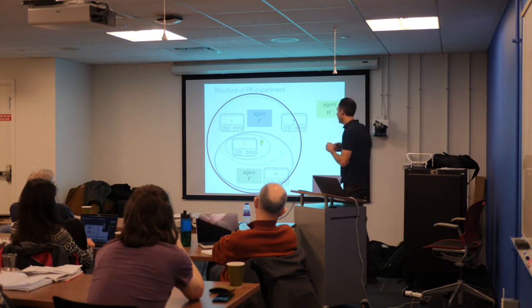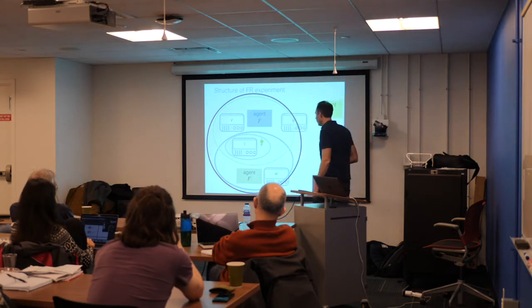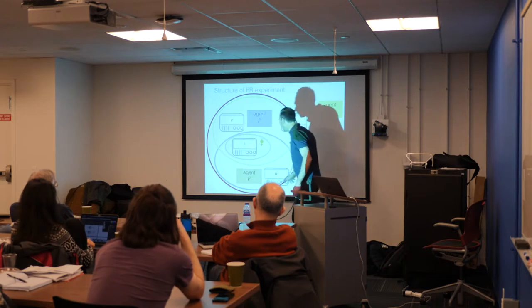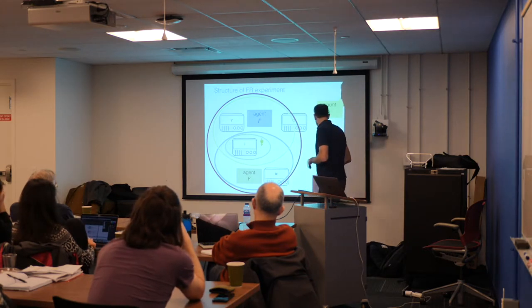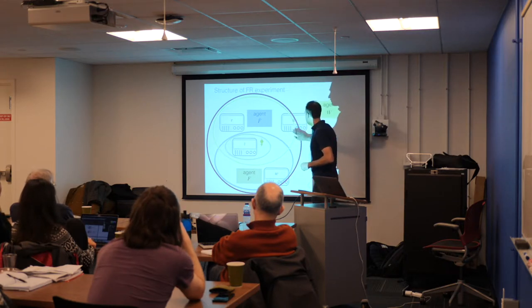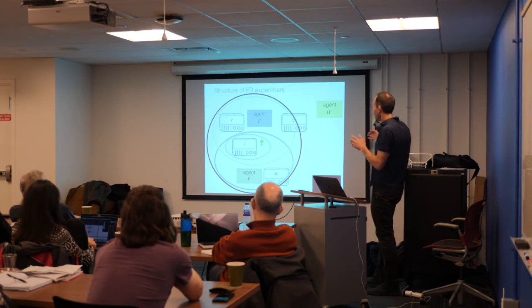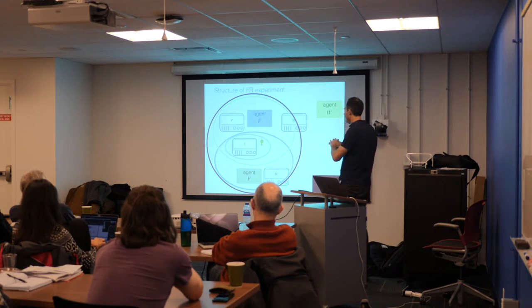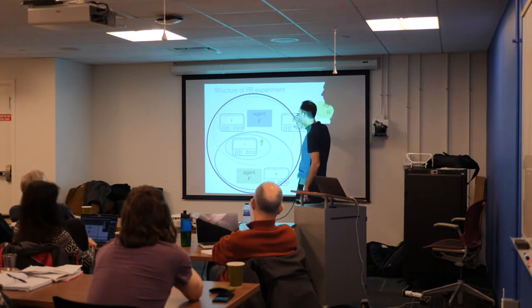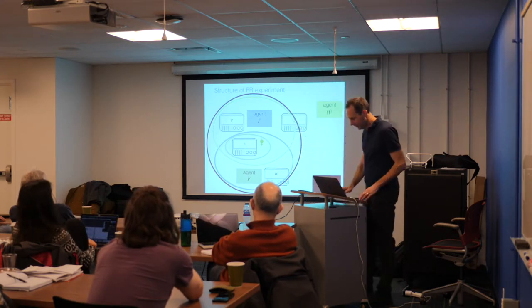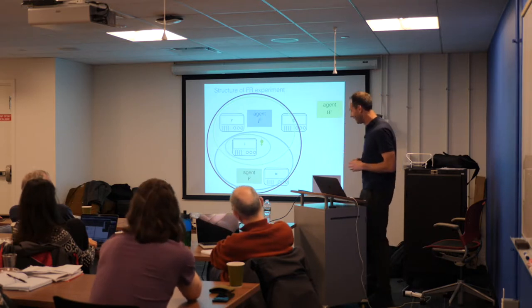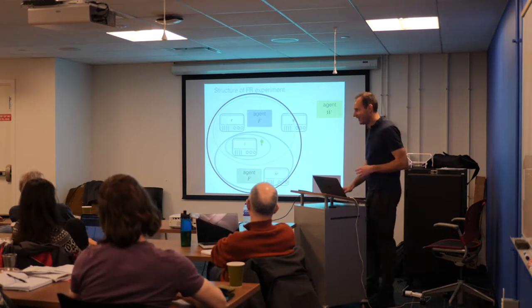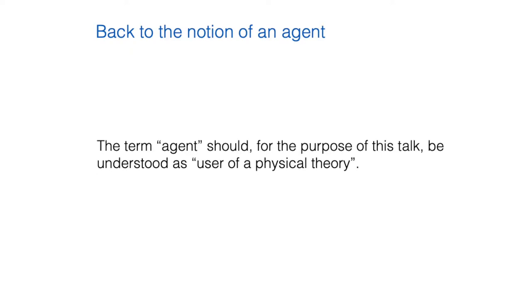One can draw a figure where each agent has a certain range to which he applies the theory. One can go to the thought experiment and ask what the individual agents do. For example, agent F applies the theory to describe part of the SOT experiment — which includes agent F and the measurement device — but not the agent called 'black.' The important thing is that neither of the agents applies the theory to herself. This is really the key constraint.